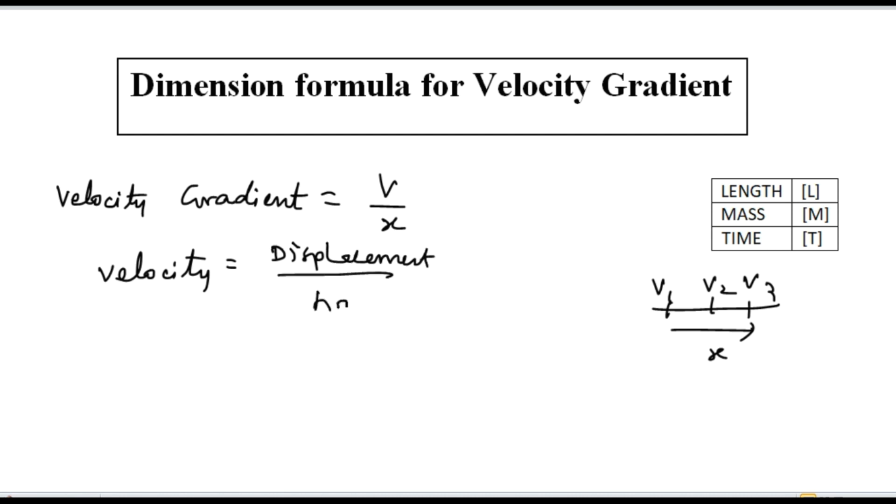Displacement has the dimensional bracket [L] and time equals [T]. Velocity gradient is given by [L][T^-1], that is divided by, again it is divided by length [L].